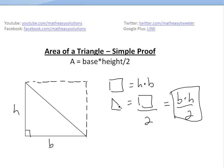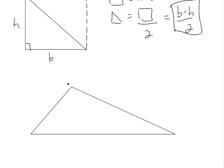So this is a quick proof for a right-angled triangle, but what if you have a triangle like this? It's not a right-angled triangle.